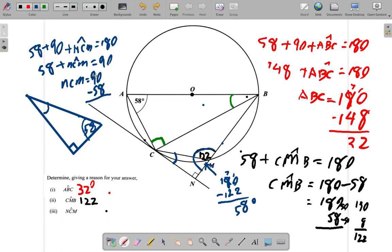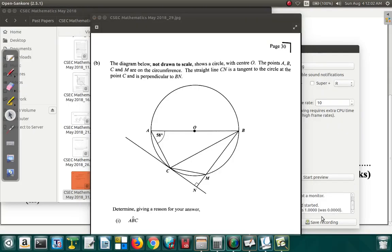90 minus 58. So 1 from 9, I get 8. 10 minus 8, that's 2. So it's 32 degrees right here, 32 degrees. Okay, so that seems like it for that part of the question for now.